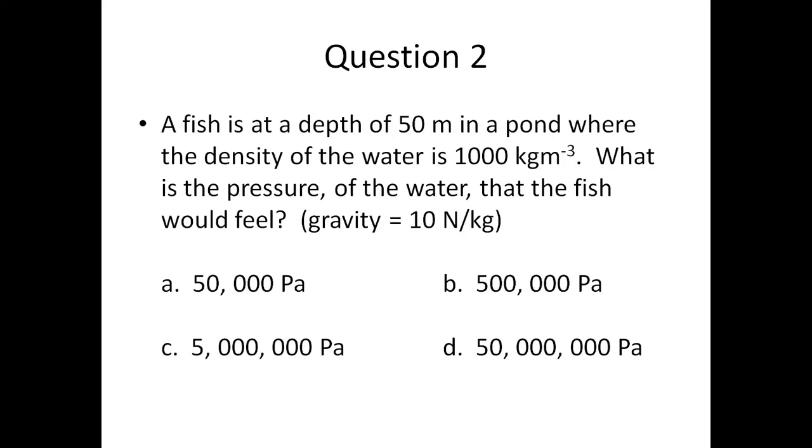Question two: A fish is at a depth of 50 meters in a pond where the density of the water is 1000 kilograms per cubic meter. What is the pressure of the water that the fish would feel?